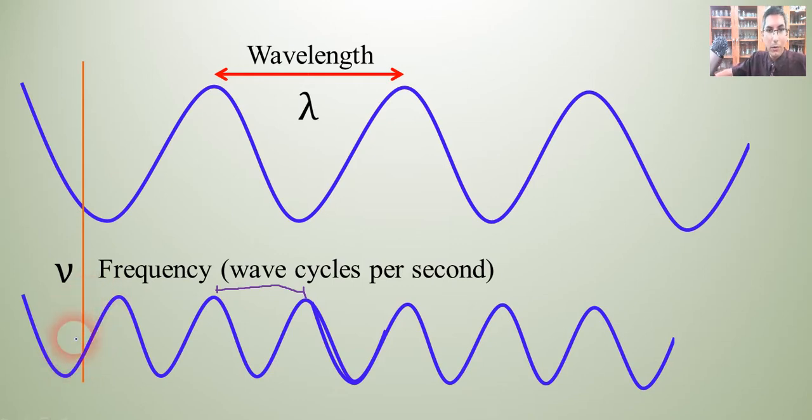And so if it were this wave here, we could say maybe 10 million waves will pass that point per second. In this one, it might be only three or four million waves. So it has a much lower frequency because it has a higher wavelength. Now we can actually compare this and see that wavelength and frequency are inversely proportional.